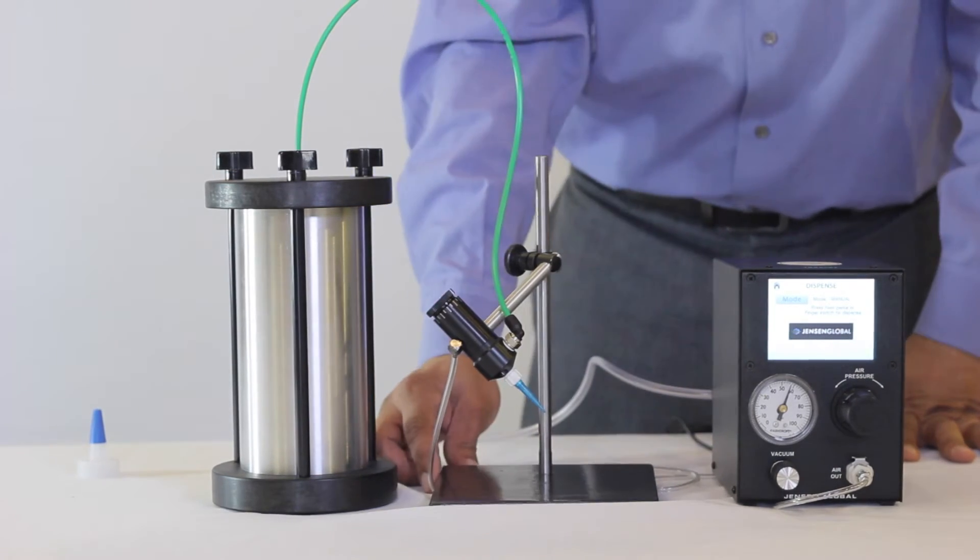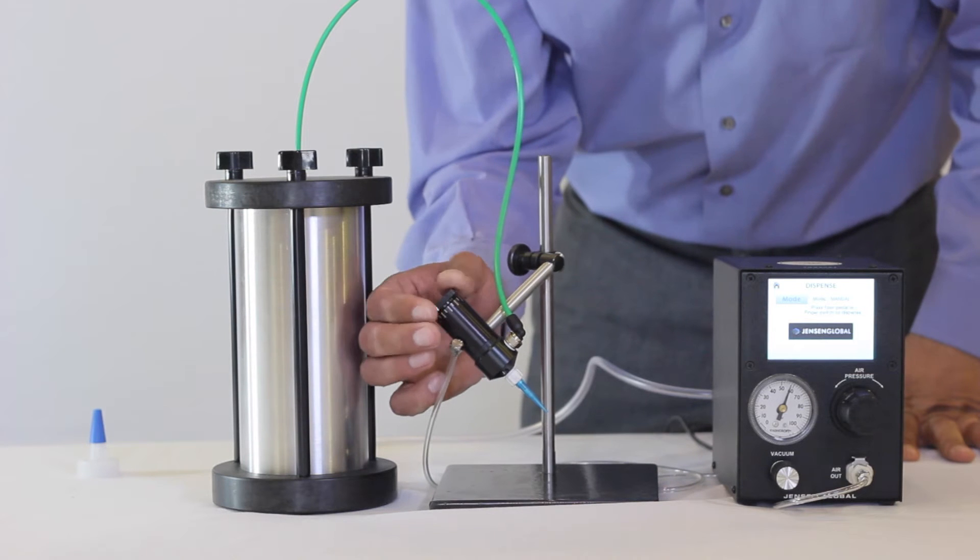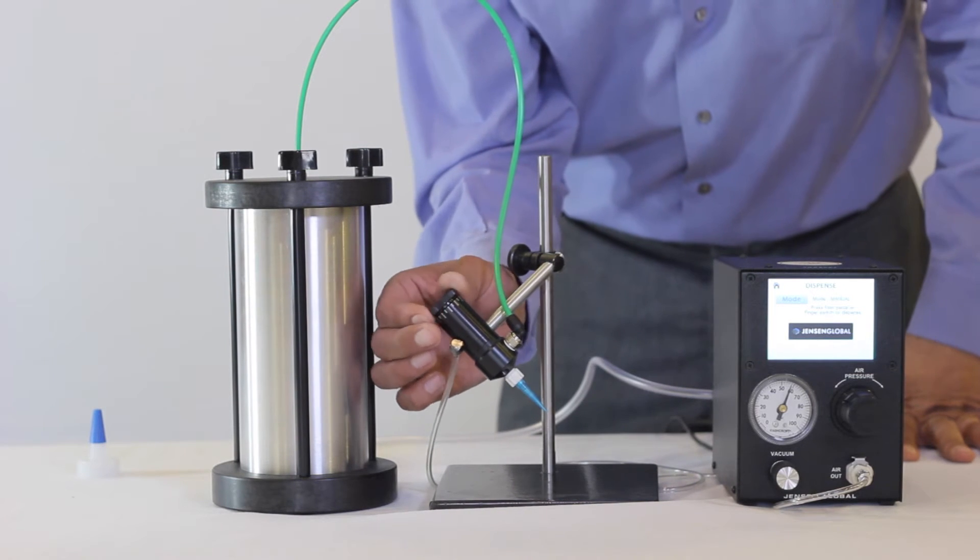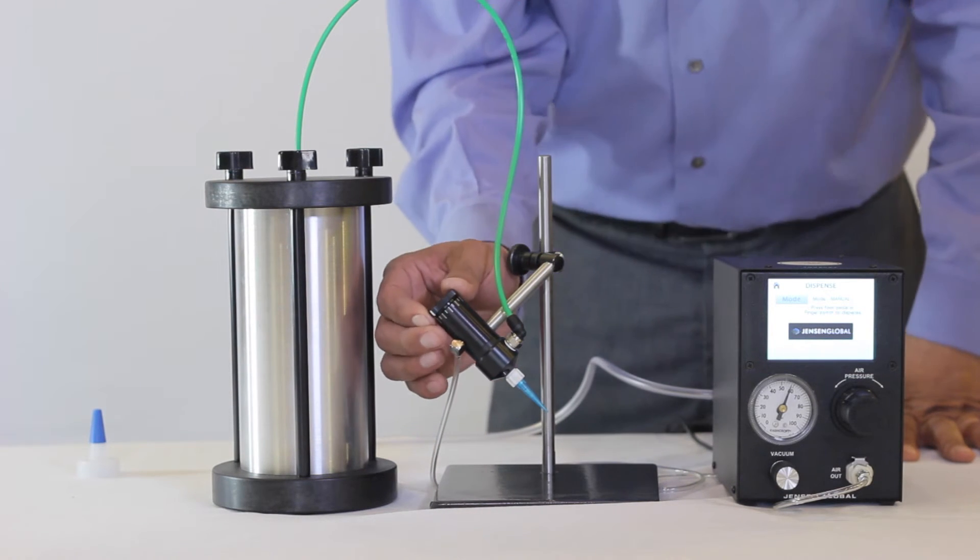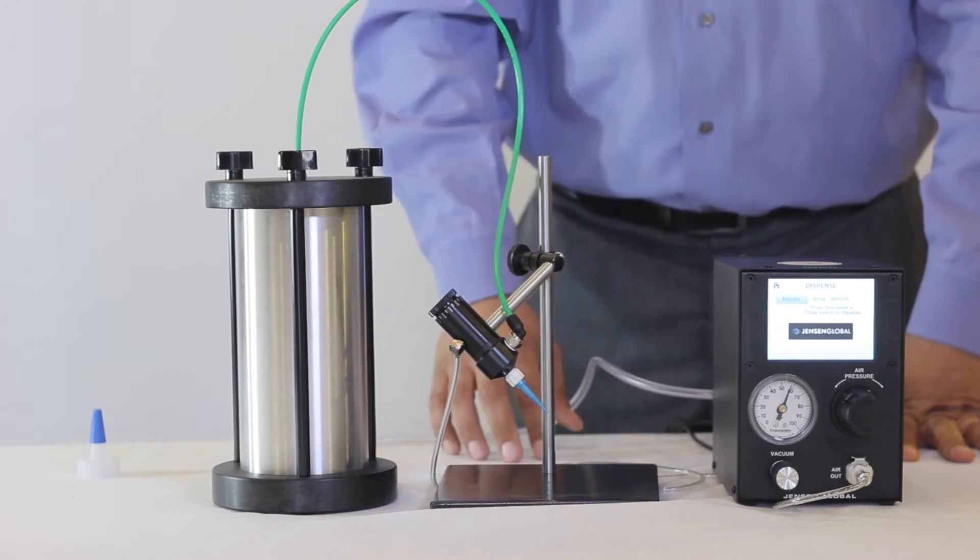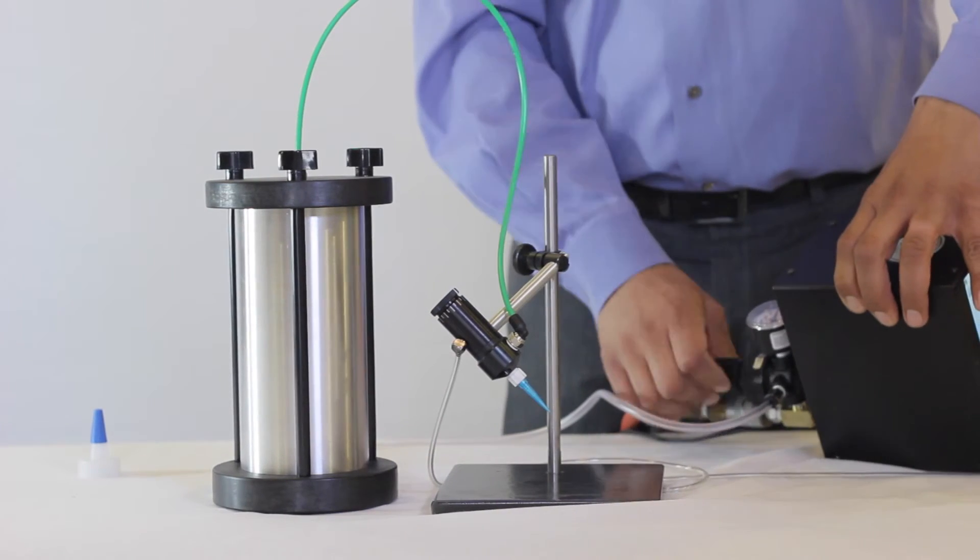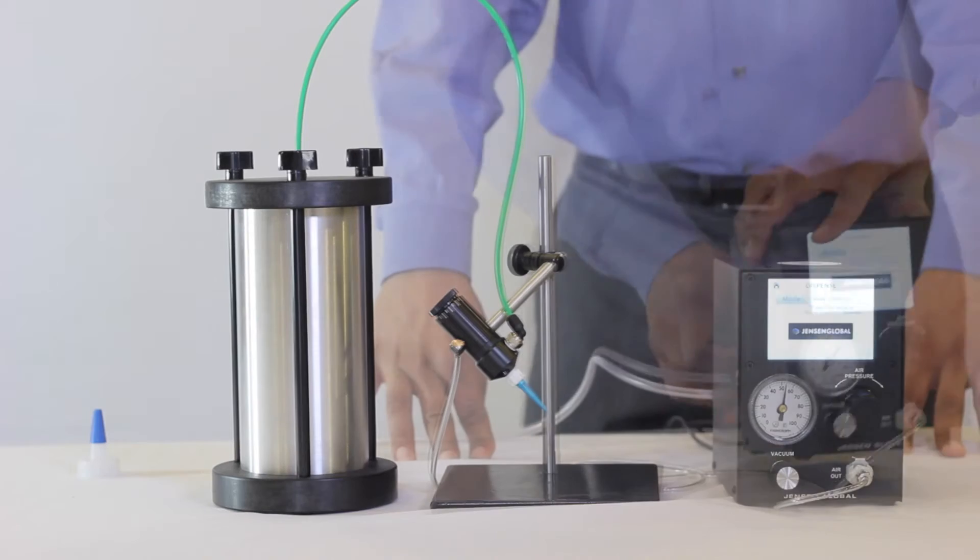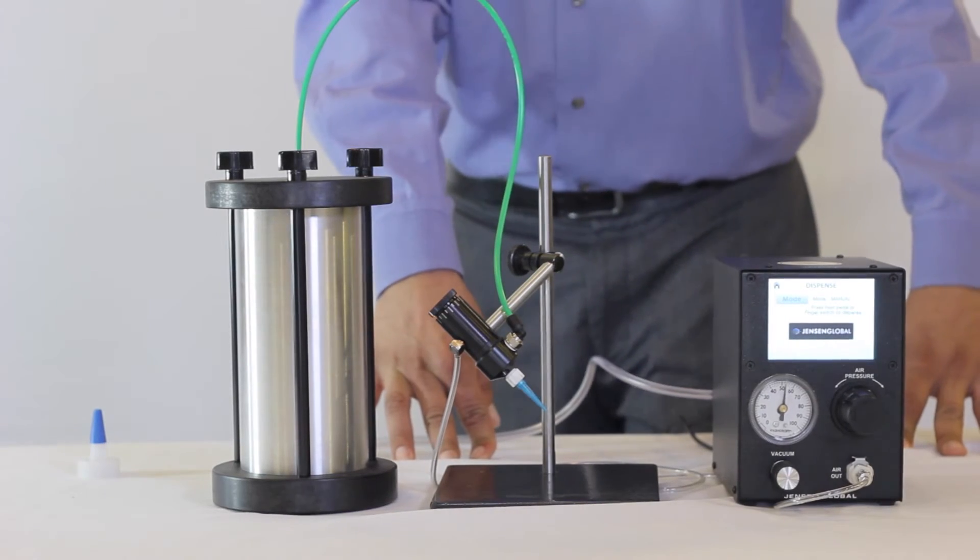Also, make sure the stroke adjust is set to about a quarter turn to the right from the closed position which is a good starting point to test your material. Pressurize the tank slowly by adjusting the regulator and let the material flow through the line and reach the valve.